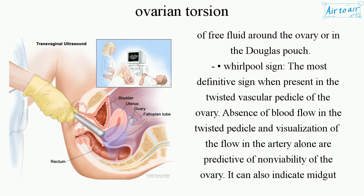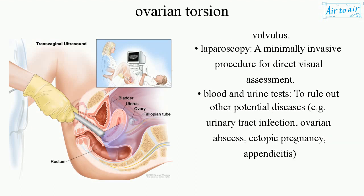The whirlpool sign is the most definitive sign when present in the twisted vascular pedicle of the ovary. Absence of blood flow in the twisted pedicle, and visualization of flow in the artery alone, are predictive of non-viability of the ovary. It can also indicate midgut volvulus.